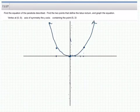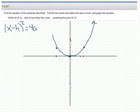The first thing we need to do is find the equation of the parabola. Since the parabola is hugging the y-axis, it's going to have the general form x minus h all squared equals 4a times the quantity y minus k.